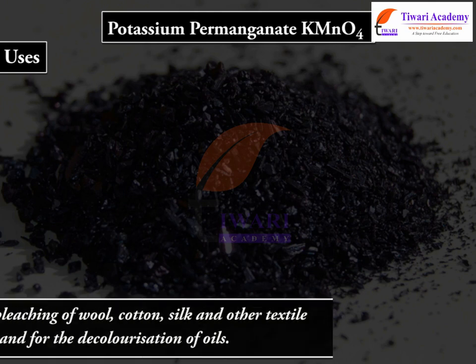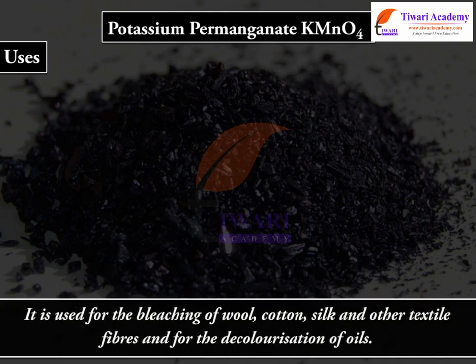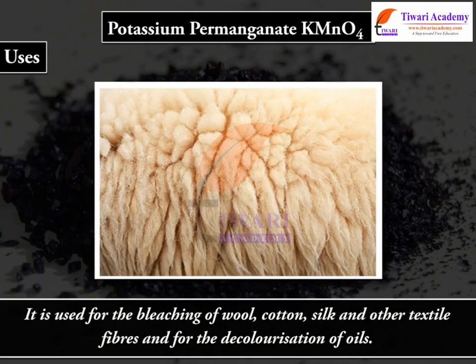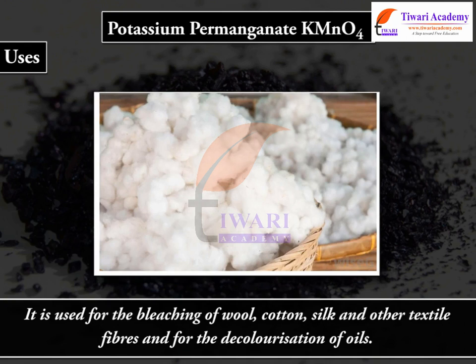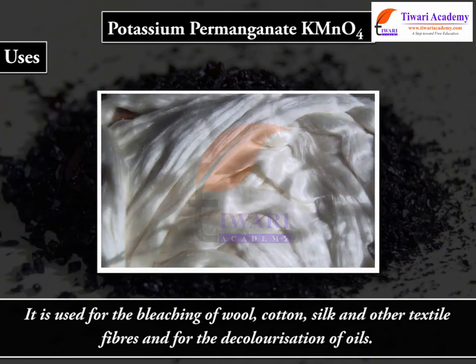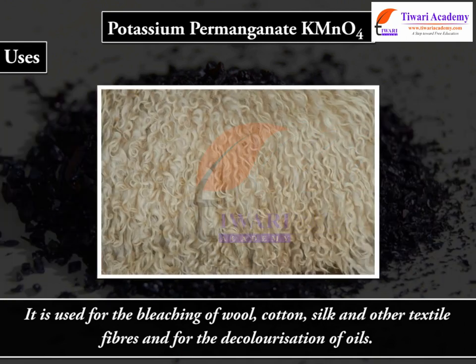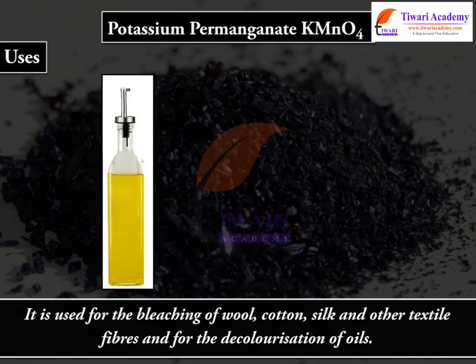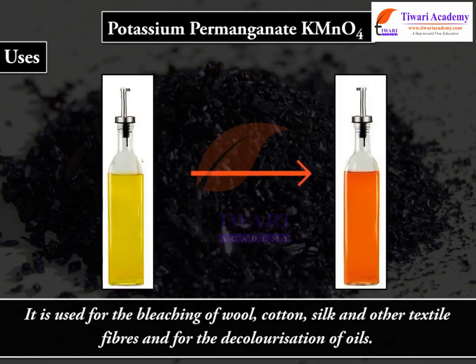Potassium permanganate is used for the bleaching of wool, cotton, silk and other textile fibers, and for the decolorization of oils.